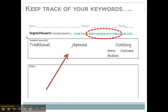You also need to keep track of your keywords. In this note sheet, you'll see I have my subsidiary question written down: 'What does traditional Japanese clothing look like?' And my keywords are going to be 'traditional,' 'Japanese,' and 'clothing.' Traditional and Japanese I'll probably leave the same, but for clothing you could add extra keywords: 'dress,' 'costume,' or 'fashion.' So that would give me a really good start for that question.